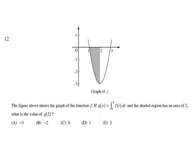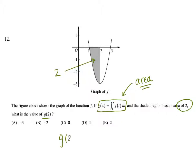For our next problem, we need to evaluate g of 2, where g of x is defined as the integral from 1 to x of f at t dt — which represents area. That means g at 2 equals the integral from 1 to 2 of f at t dt, corresponding to the shaded region shown. Since the region is bounded below the x-axis, it's actually negative 2. That's answer choice B.